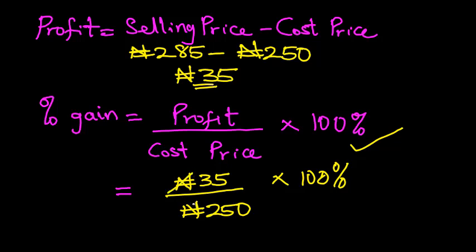Naira will divide naira, so the naira sign will be cancelled. Then 5 can divide the numerator 35 and the denominator 250. First of all, we need to get rid of the zero. Zero cancels zero. Then 5 can divide 35, that will give us 7. 5 can divide 25, which will give us 5. Then 5 into 5 is 1, 5 into 10 is 2. So we are left with 7 times 2, which will give us 14. So the percentage gain is 14%.